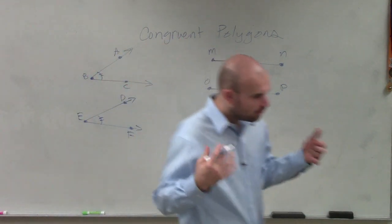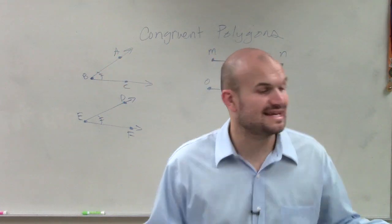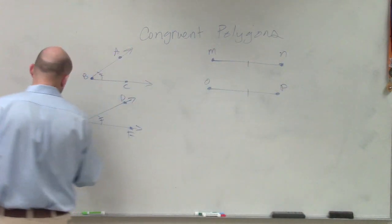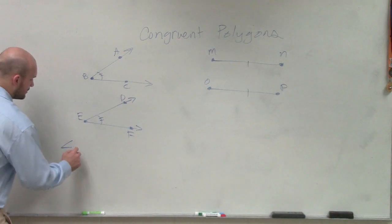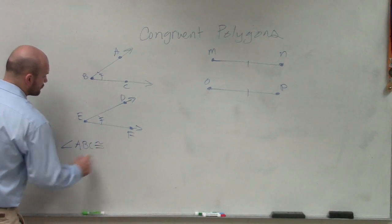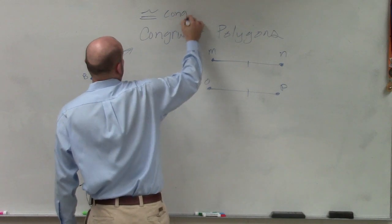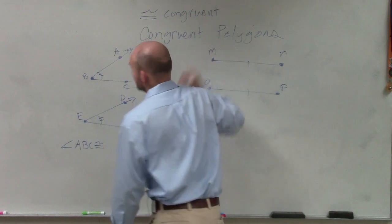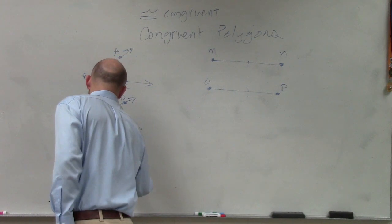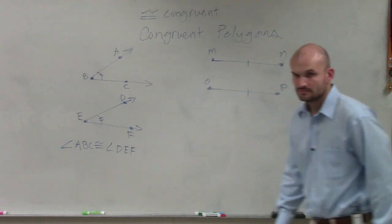Now, when we first started talking about line segments and lines, what we talked about is, what happens if these angle measures are equal in measure? So what we could say was, we would say angle ABC is congruent to angle DEF.